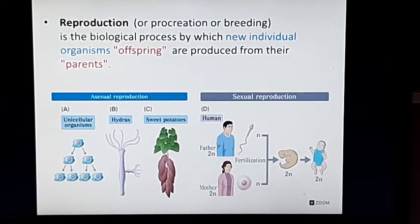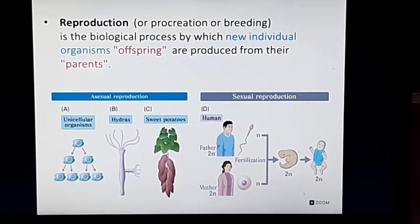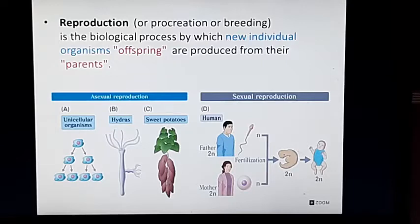When we talk about reproduction, we define it as a biological process by which new individual organisms or offsprings are produced from their parents. Reproduction is also known as procreation or breeding. In this process, every living organism makes a copy of itself. There are many methods of reproduction, broadly categorized as asexual reproduction and sexual reproduction.